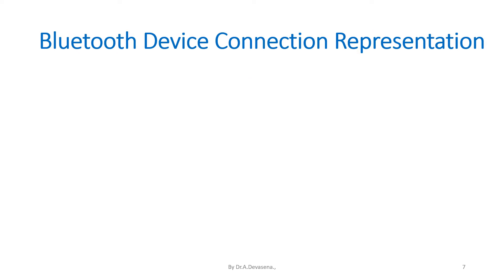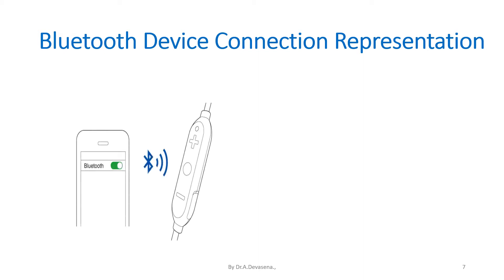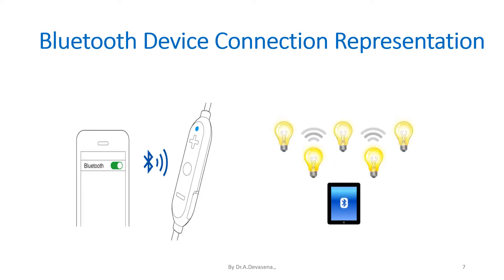Here is the Bluetooth device connection representation. Here is a mobile phone with Bluetooth in the on condition. Through the Bluetooth, a radio signal is sent to the mic present in our headset. In another animation, Bluetooth turns on and off the electrical gadgets or bulbs, as represented in this animation.